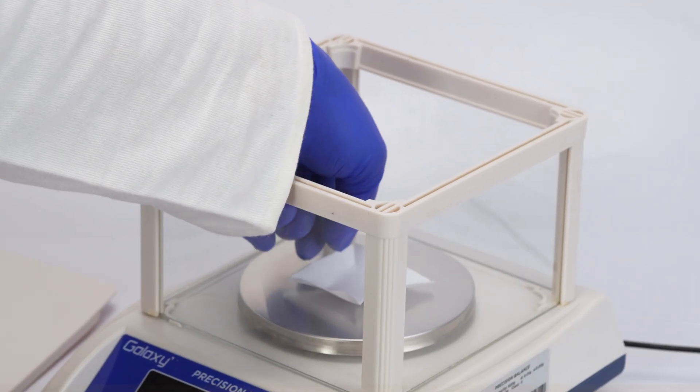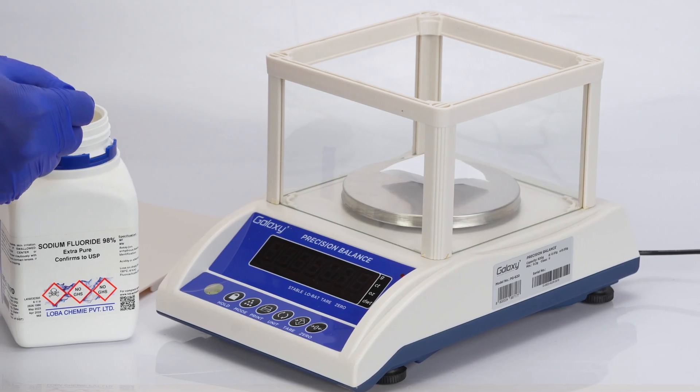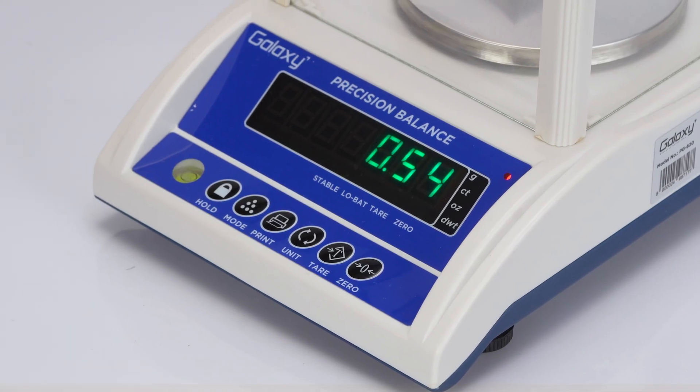To weigh a salt sample, place weighing paper on the pan and press the zero key. Add the salt sample to be measured and wait for the stable indicator before reading the weight.